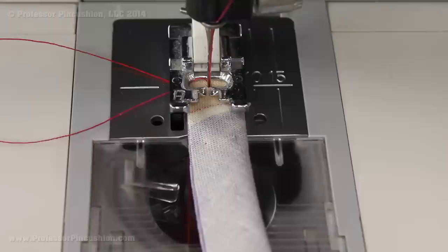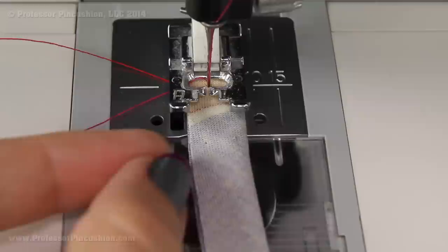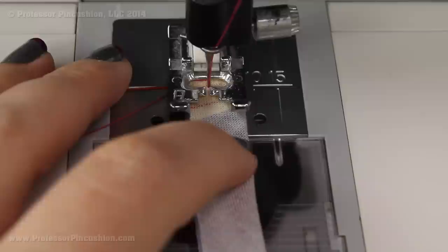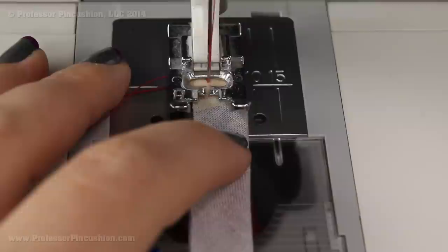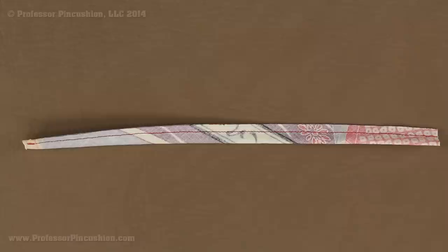Now normally when I say sew a quarter inch seam allowance, you are stitching a quarter inch from the raw edge. In this particular case you really want to make sure that you are sewing a quarter inch from the fold line. So here is my fold line on the quarter inch line and then I am stitching a quarter inch away from that. So your raw edges are going to be much smaller than that. I am using a regular stitch, don't forget to backstitch, and I am stitching all the way down the strip, a quarter inch from the fold, not from the raw edge.